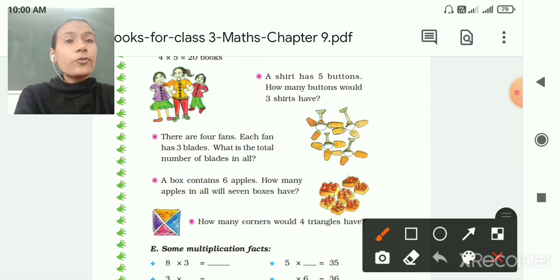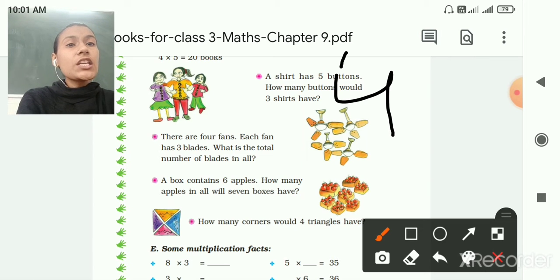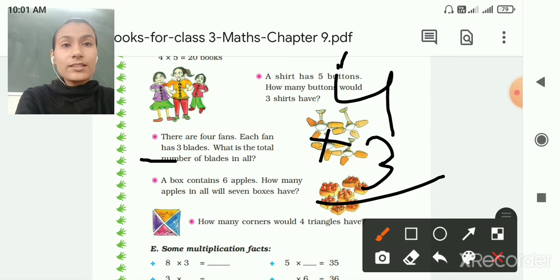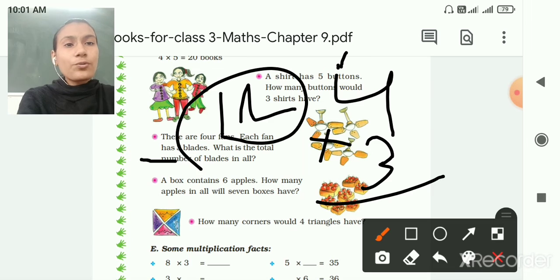Then there are 4 fans. Each fan has 3 blades. So what is the total number of blades in all? So total 4 fans and each fan has 3 blades. So 4 multiply by 3, 4 3s are 12. So the total number of blades is 12 blades.